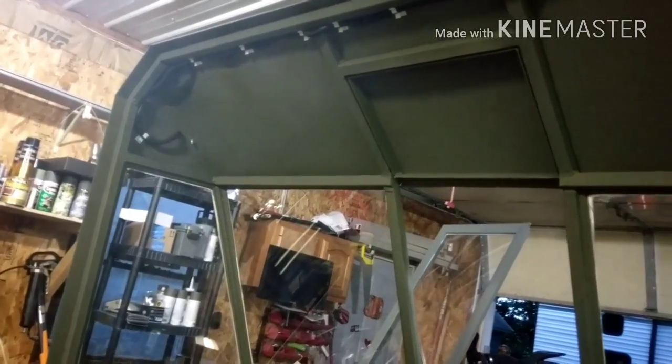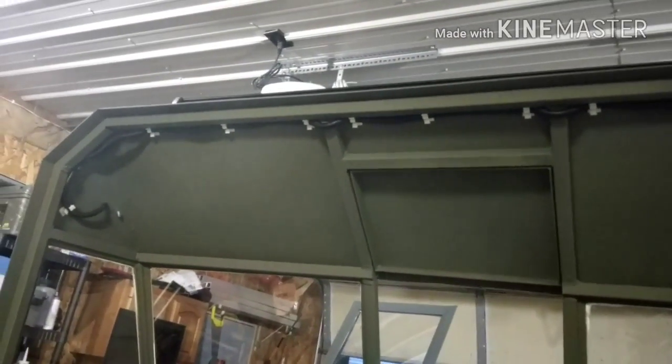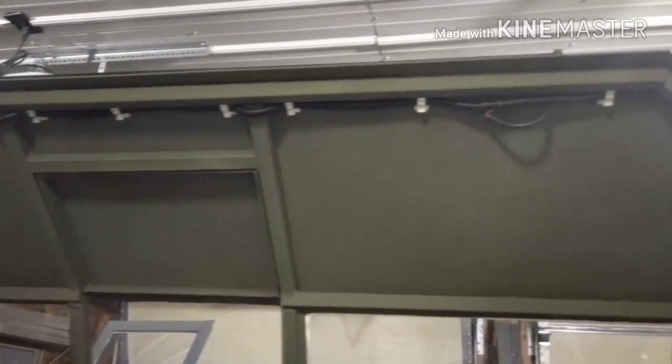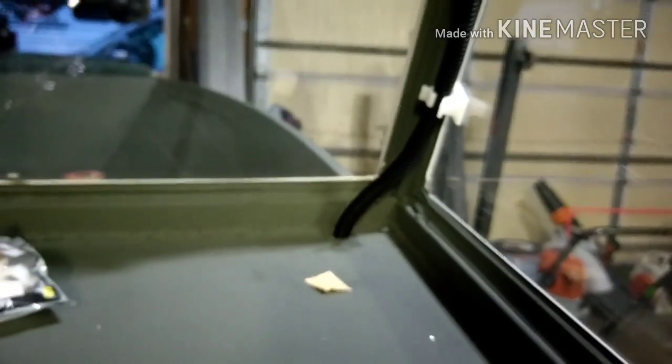All right, so the front wires are done for all the LED light bars. So it runs along the top, over there, down, through the dash, and underneath.